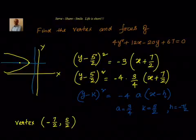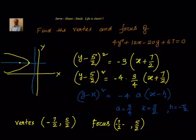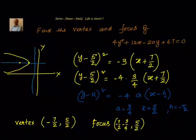The focus will be on the more negative side. That line is a horizontal line, meaning the y-coordinate is constant and the x-coordinate will change. The focus is at (-7/2 - 3/4, 5/2). Why subtract 3/4? Because the distance from vertex to focus equals a, and we are going in the negative direction. So it simplifies to (-17/4, 5/2).